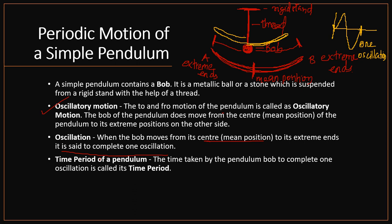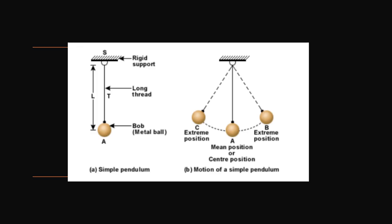The time period of a pendulum is the time taken by the pendulum bob to complete one oscillation. Here you can see the simple pendulum: a rigid stand, a thread, and the bob (metallic ball). Position B on one side is one extreme end, position B on the other side is another extreme end, and the center is the mean position. This is the motion of a simple pendulum.